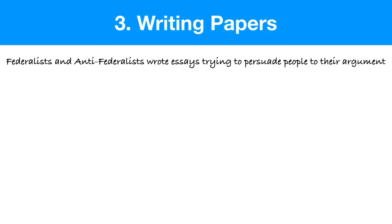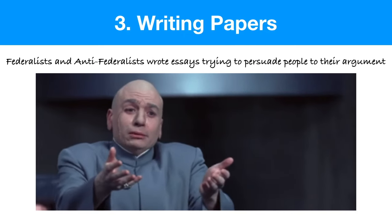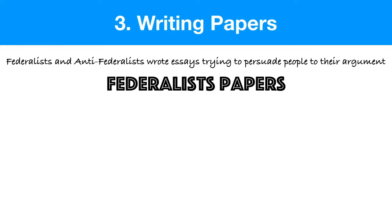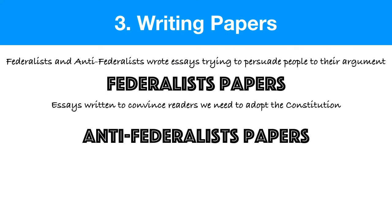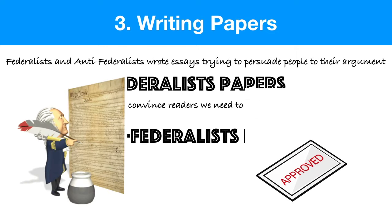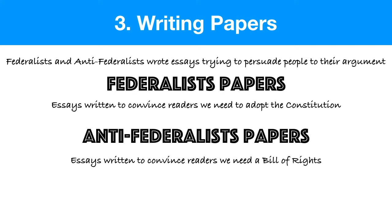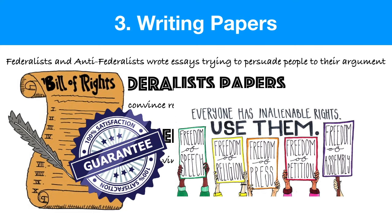Both sides reached a stalemate because they couldn't find enough support. So they started writing papers and essays to persuade people to join their side. The Federalists wrote the Federalist Papers and the Anti-Federalists wrote the Anti-Federalist Papers. The Federalist Papers were written to convince readers to ratify the new Constitution and make the nation stronger. The Anti-Federalists wrote their papers mostly to argue they wouldn't sign without a Bill of Rights, describing the dangers of central government overreach and the importance of protecting the common person.